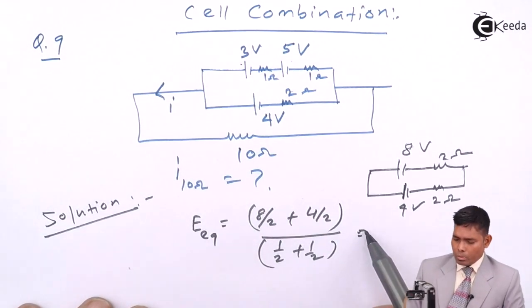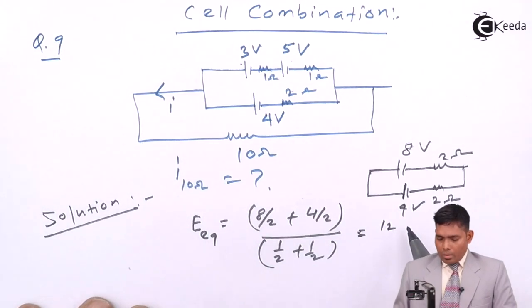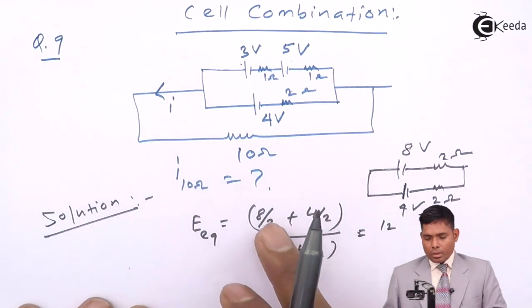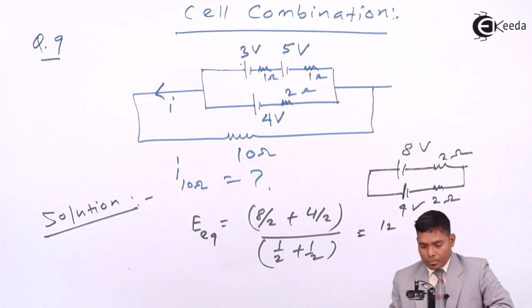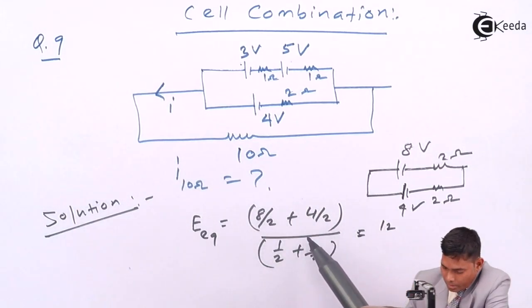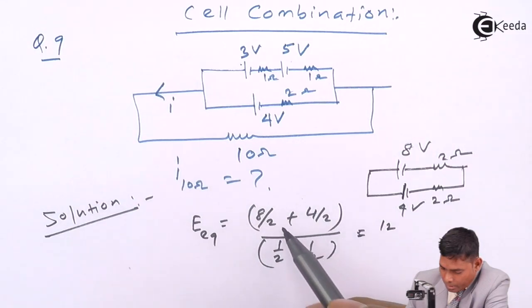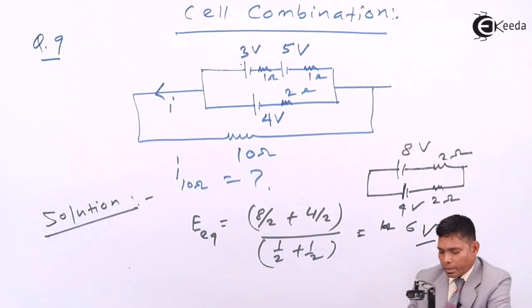E1 by R1, that is 8 by 2 plus 4 by 2 divided by 1 by 2 plus 1 by 2. So that comes out to be 12, this is 1 and this is 4. 1 by 2. This is 4, this is 2, 6, 4 plus 2, 6, this is 1, so it is 6 volt battery.